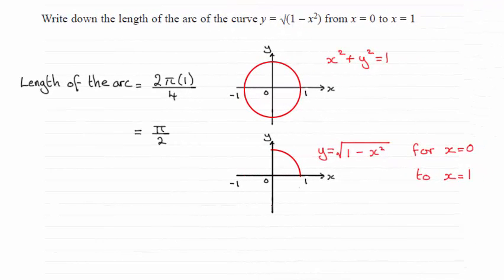Hi there. Now for this question you had to write down the length of the arc of the curve y equals the root of 1 minus x squared from x equals 0 to x equals 1.